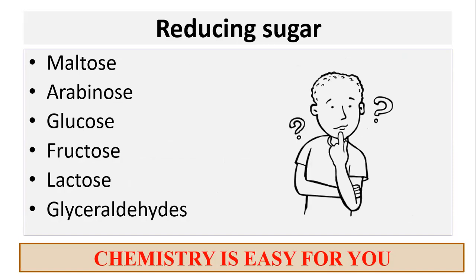In exams like MSc chemistry exams, you are usually supposed to choose one option among the given options which is a reducing sugar. Even last year, we did have a question from this part. So let's see what the hack for this is.